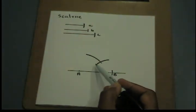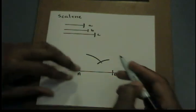Now I have two intersecting arcs. Where they both intersect, I'm going to call that point C.